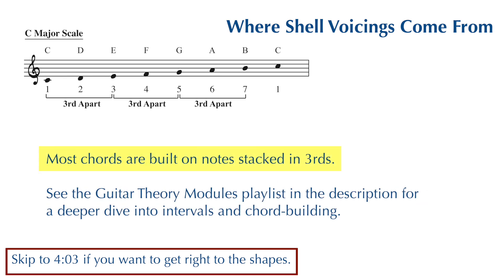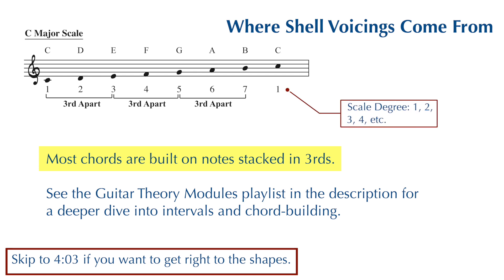Most chords are built on notes stacked in thirds. Here's a C major scale. The notes are numbered below by scale degree: 1, 2, 3, 4, 5, 6, 7, and 1.